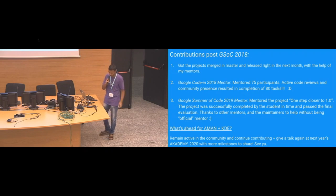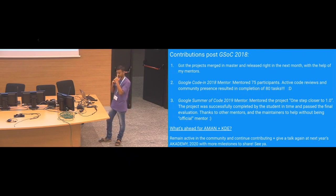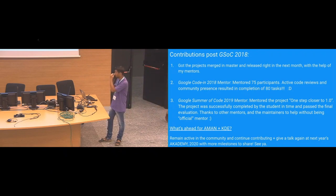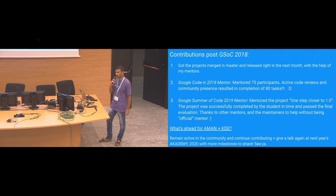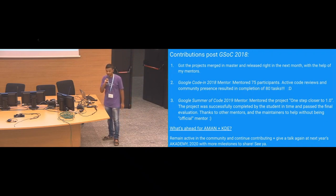That was my GSoC 2018 project. My project got merged into the master branch and released in the next month or two with the help of my mentors. I continued contributions and did mentorship in Google Code-In 2018, mentoring 75 participants which resulted in completion of around 80 tasks including coding and community outreach tasks. I also did mentorship in Google Summer of Code this year for GCompris, for the project titled 'One Step Closer to Version 1.0.' Along with three other mentors, we guided the student who successfully completed all three evaluations. My aim is to remain active in the community, continue contributing code-wise as well as doing mentorship.